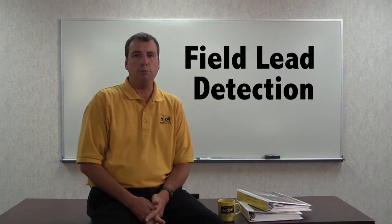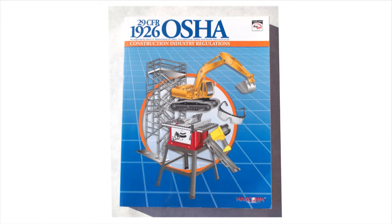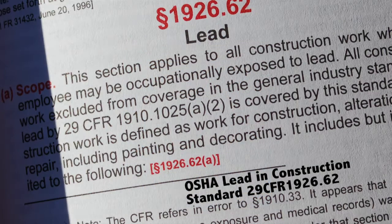Selection of a coating maintenance strategy and the controls that must be implemented is based in part on whether the existing coating system contains lead or other toxic metals that are hazardous to workers, the environment, and the surrounding public. According to the OSHA Lead and Construction Standard, any detectable concentration of lead triggers the provisions of the standard, and engineering controls, work practices, and personal protective equipment must be implemented to control the hazard. Exposing unprotected workers to lead and other toxic metals when coatings are disturbed during maintenance or removal is a violation of the standard.